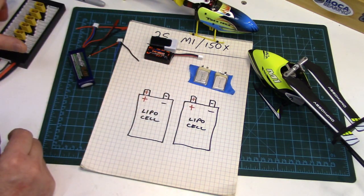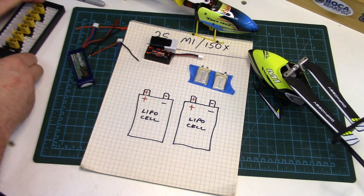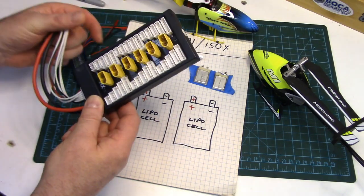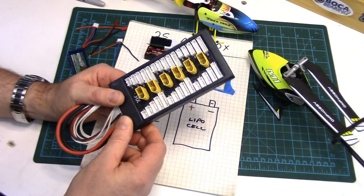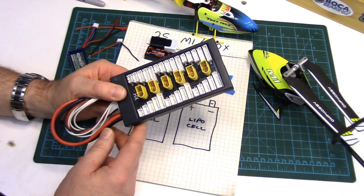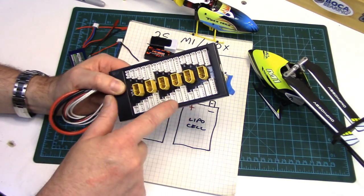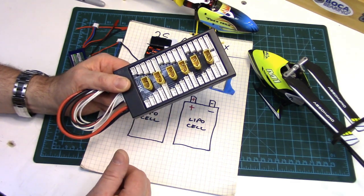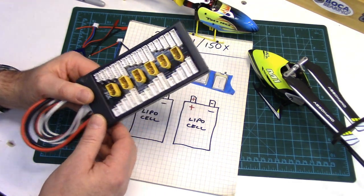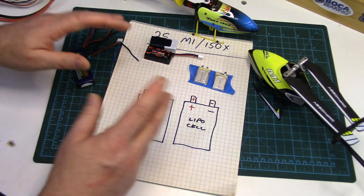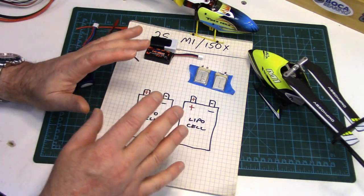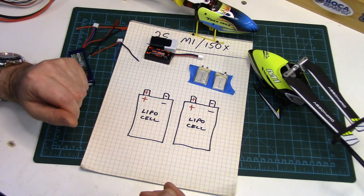I'm going to be showing you two types. The first one will be a really easy one if you've already got a JST-XH Paraboard, and we're going to be utilizing the Paraboard's balance plugs to both balance and charge just by making a simple little harness for it. And then the second one is going to be more involved. We're actually going to make a proper parallel charge harness.